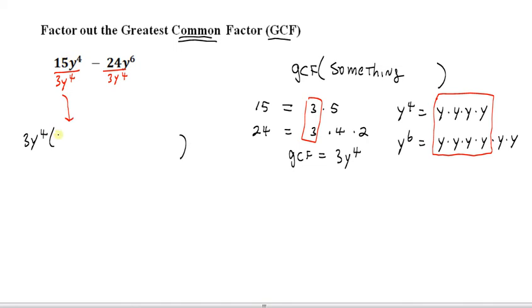So what do we get? 15 divided by 3 is 5. y to the 4th over y to the 4th cancels out completely. So, done with that one. Just bring down the sign. 24 divided by 3 is 8. y to the 6th divided by y to the 4th is y squared. So our answer, then, is 3y to the 4th times 5 minus 8y squared.